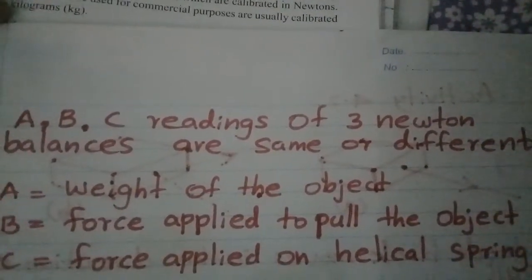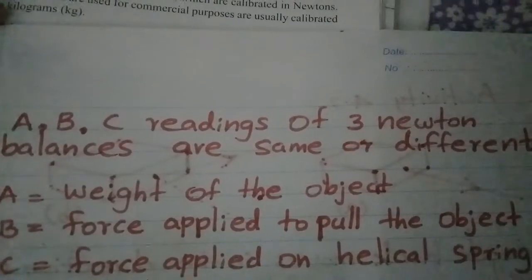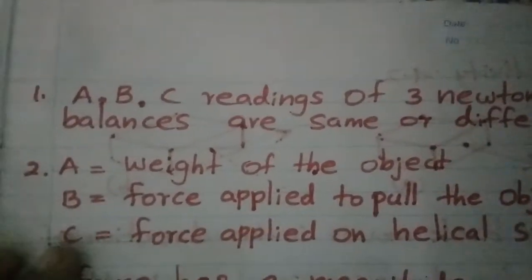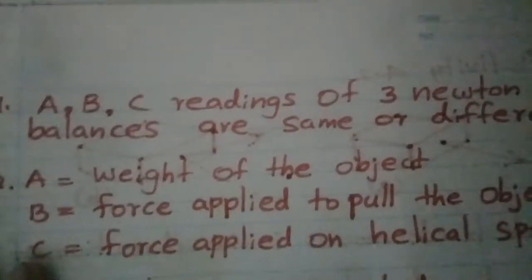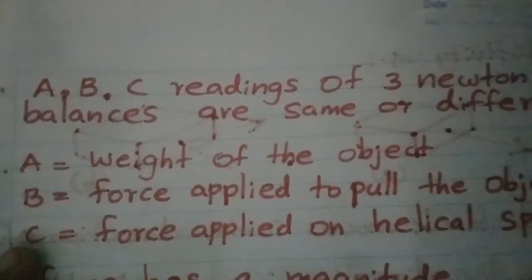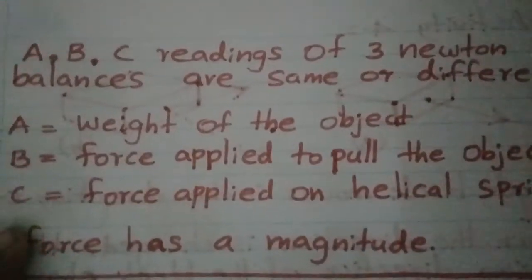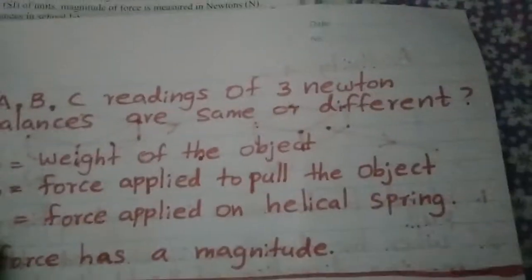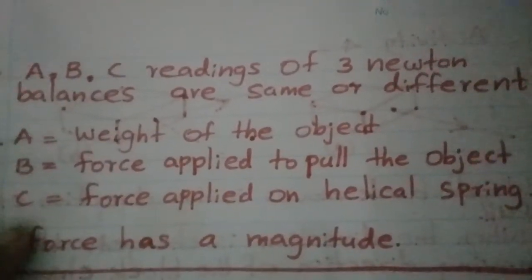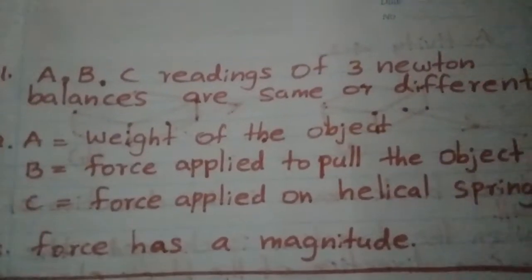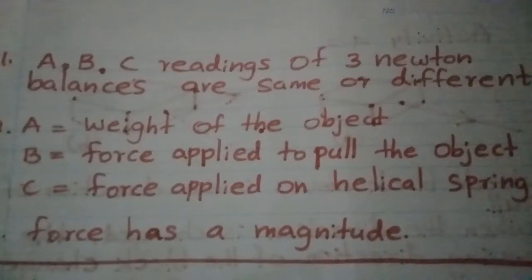The readings of the three Newton balances are different. A gives the weight of the object, B gives the force you are applying to pull the object, and C gives the force applied on the helical spring. All three A, B, and C figures are different. Through this activity, you can understand that force has a magnitude.